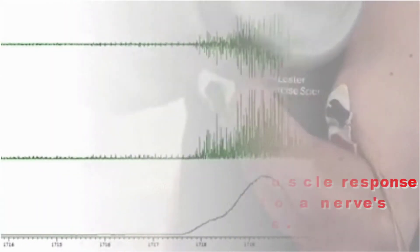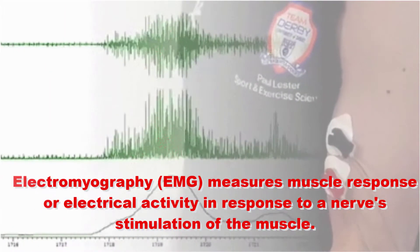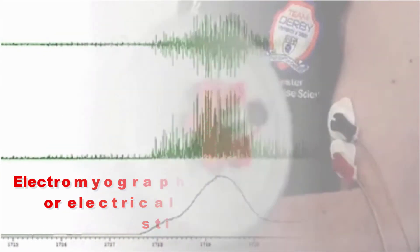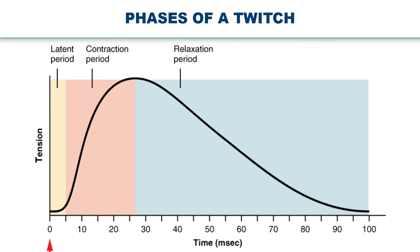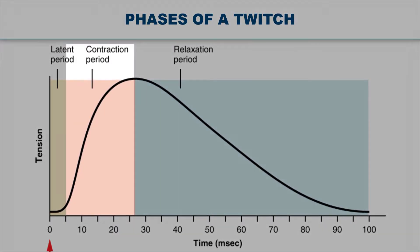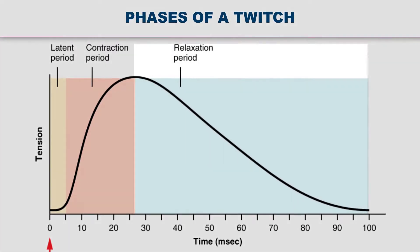The tension produced by a single twitch can be measured by a myogram, which is an instrument that measures the amount of tension produced over time. Each twitch undergoes three phases: a latent period, a contraction phase, and a relaxation phase.